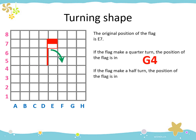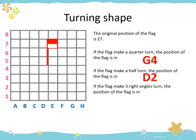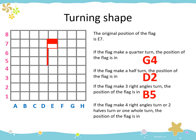What if the flag makes another quarter turn? The position of the flag is at D2. Now, if the flag makes three right angles turn, the position of the flag is D5. How about if the flag makes four right angles, or two half turns, or one whole turn? The position of the flag is back at E7 — it returns to the original position.